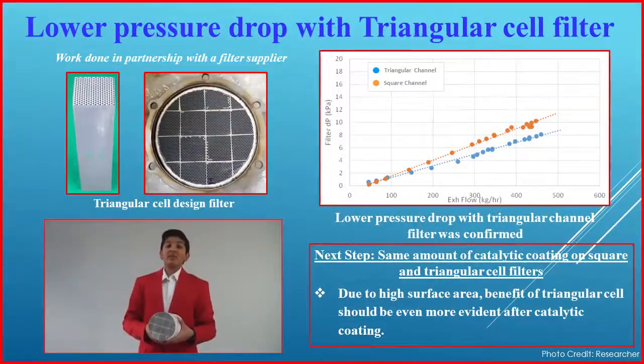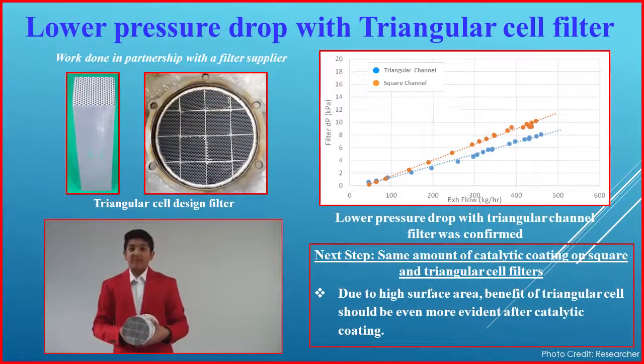My triangular cell filter innovation can have a huge impact on global diesel fuel consumption. Since all diesel vehicles use a filter, a 0.5% improvement in fuel economy due to an optimized filter design can save 250 million gallons of fuel per year, while reducing particulate matter and saving lives. I shared my research with a filter manufacturer.